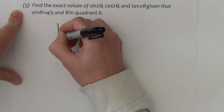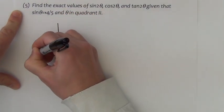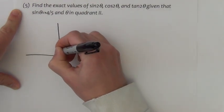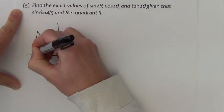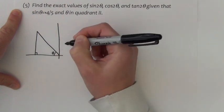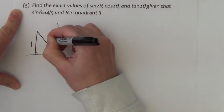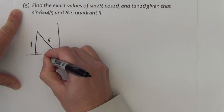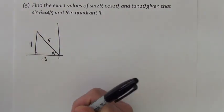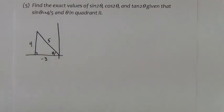The first thing I might do with any problem like this is sketch the triangle and complete it. If sine is 4 fifths, that would be opposite over hypotenuse. In quadrant 2, the adjacent is going to be negative. So we're looking at a 3, 4, 5 right triangle with the 3 being negative.